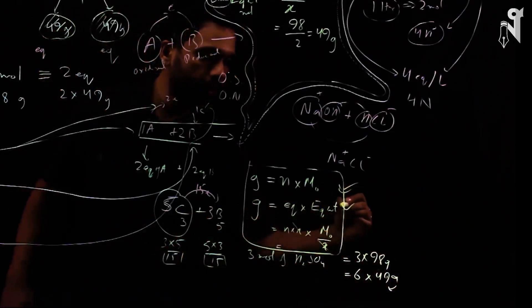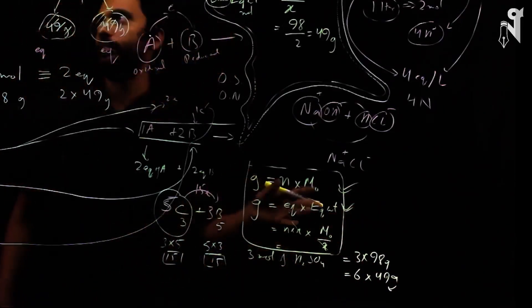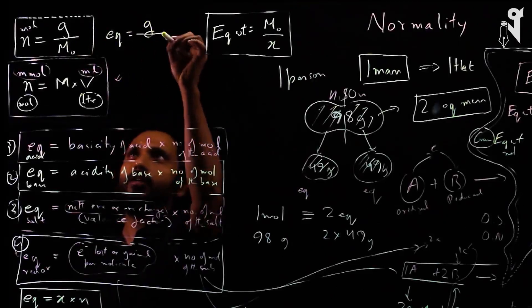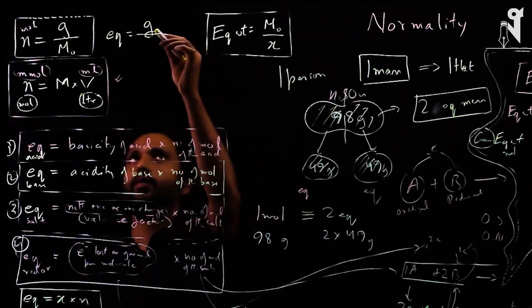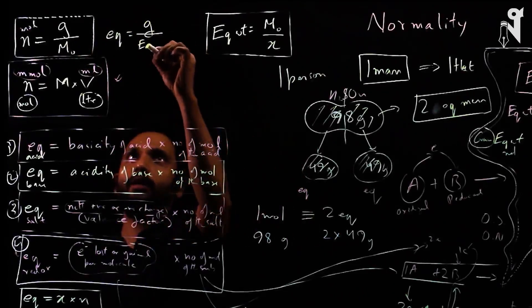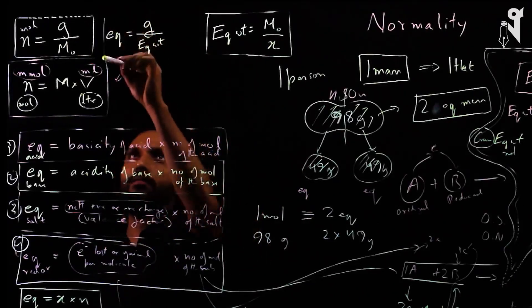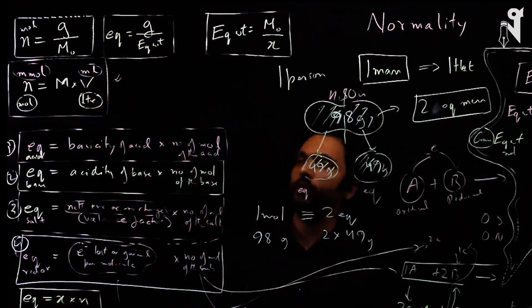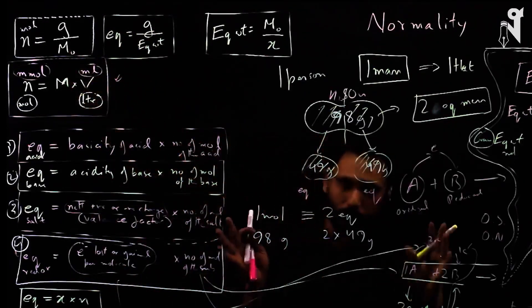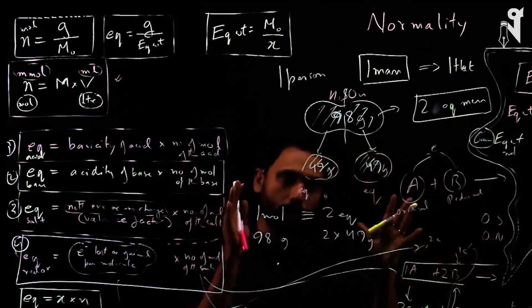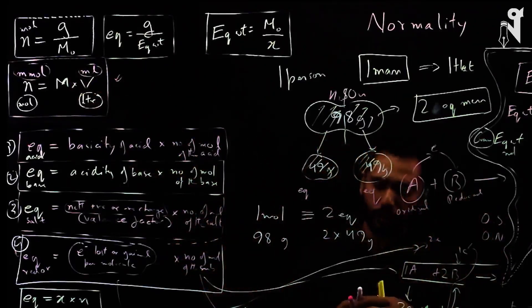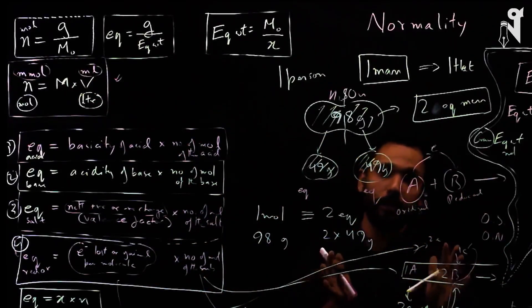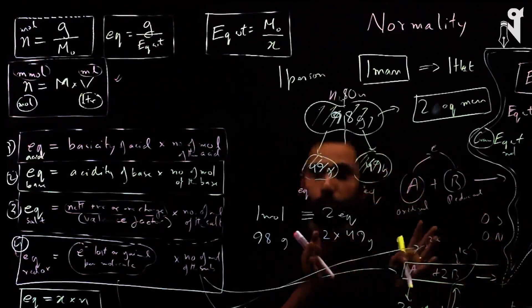Similarly, if you have net weight G divided by equivalent weight, you get number of equivalents. However, it's preferable to find the number of moles first, then multiply by the X factor to get equivalents. This chapter is the mole concept — keep your focus on number of moles.